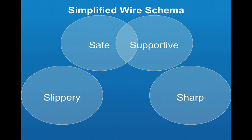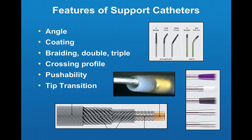The general approach: mentally divide and bucket your wires into slippery, safe, sharp, and supportive, then choose the right wire for the anatomy. Also important are support catheters — use angled support catheters as needed. We used a Caravelle catheter in the case. These can also be divided into 0.035, 0.018, and 0.014 systems. Below the knee, 0.018 and 0.014 play the major role. Consider whether catheters are angled, braided, double or triple braided, and their crossing profile and pushability.